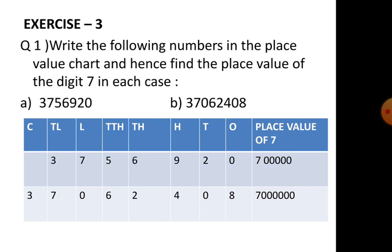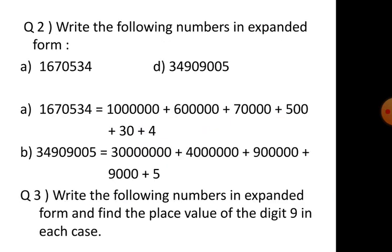For the next number, seven is in the ten lakhs place. So we write seven ten lakhs and place it accordingly by giving zeros for all the other places — lakhs, thousands, hundreds, tens, and ones — all will be zero.